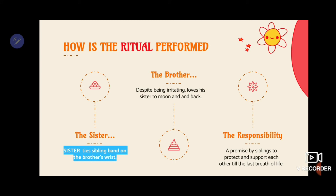Let us see a few examples: Sister ties sibling band on their brother's wrist. Despite being irritating, he loves his sister to the moon and back. And a promise by siblings to protect and support each other till the last breath of life. That is how we can use various words in this manner.